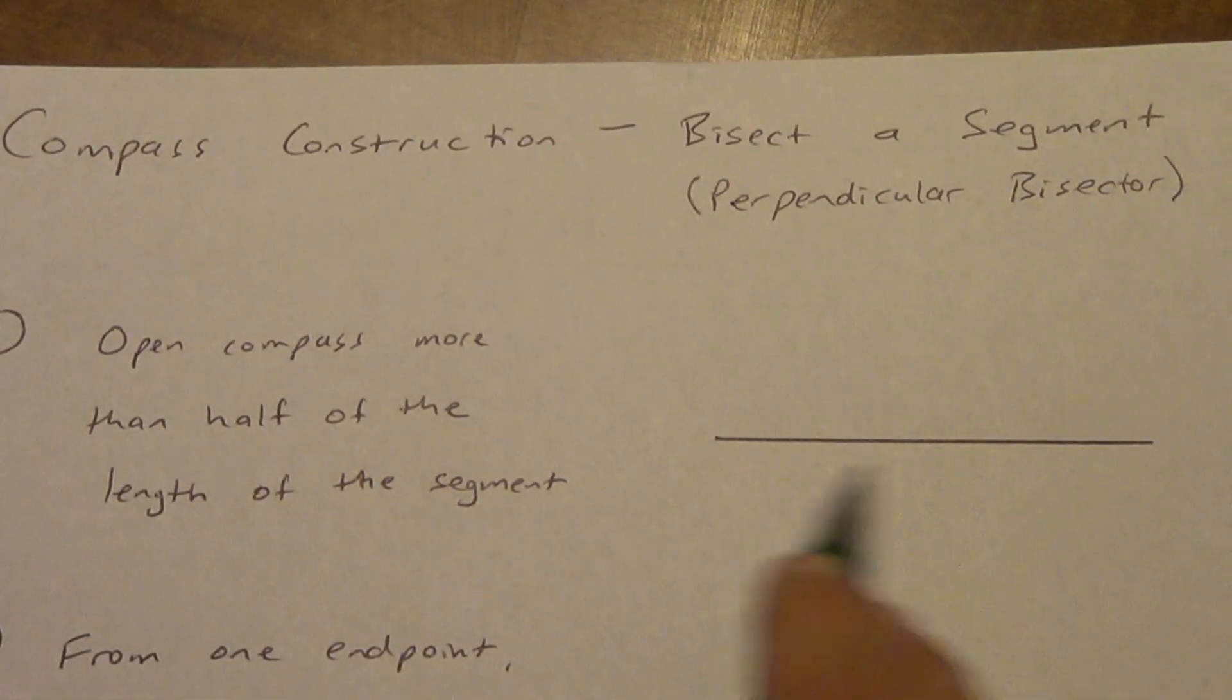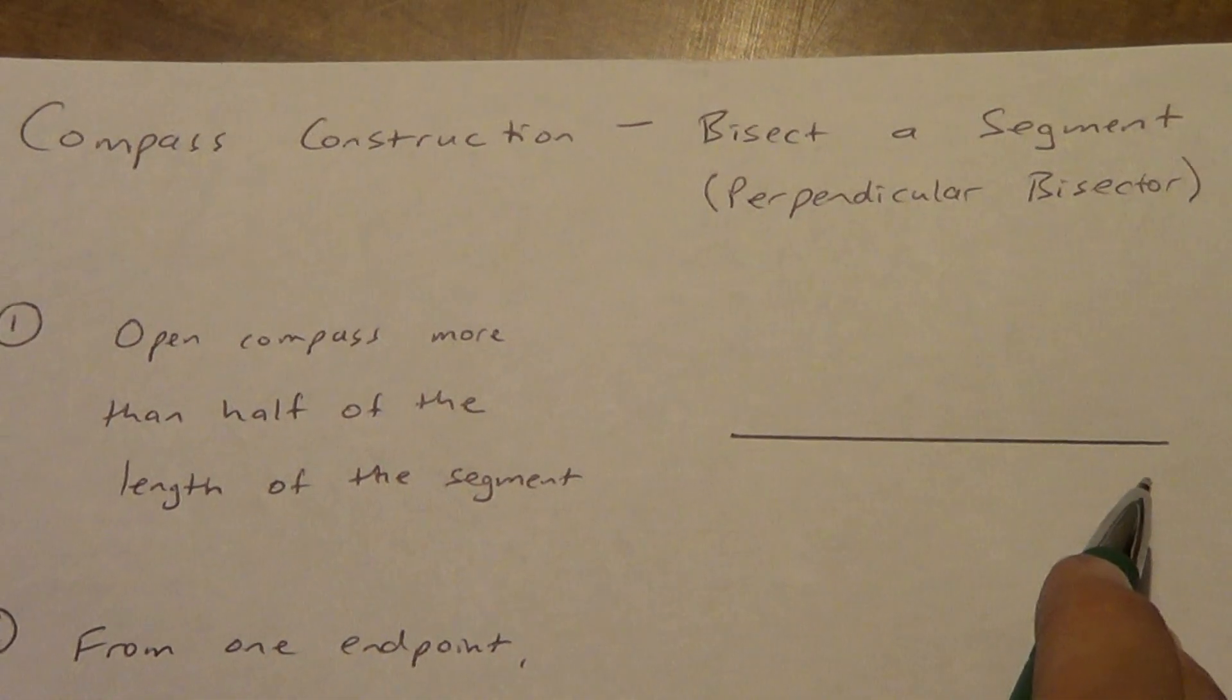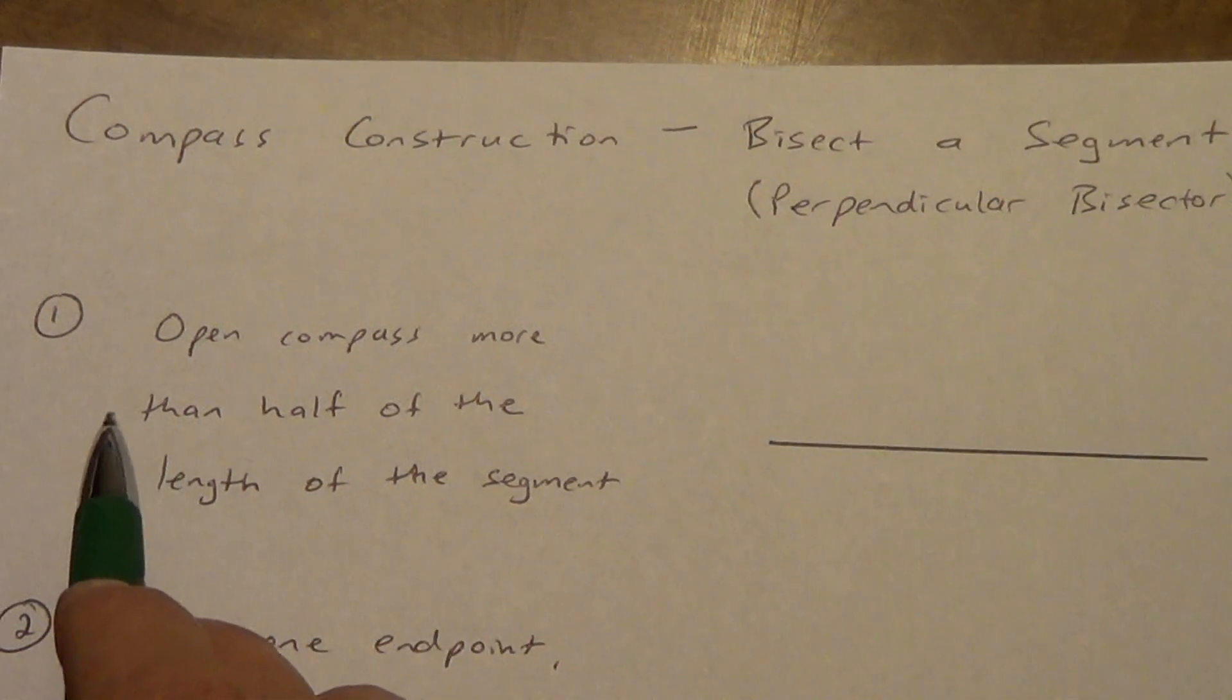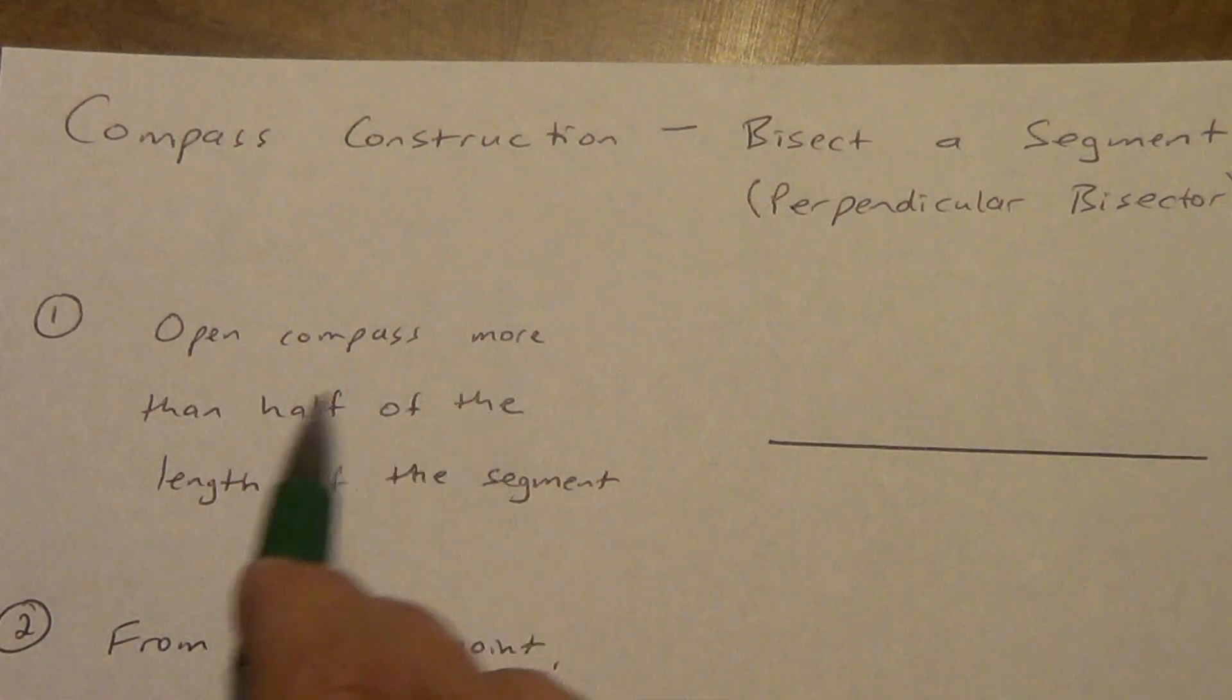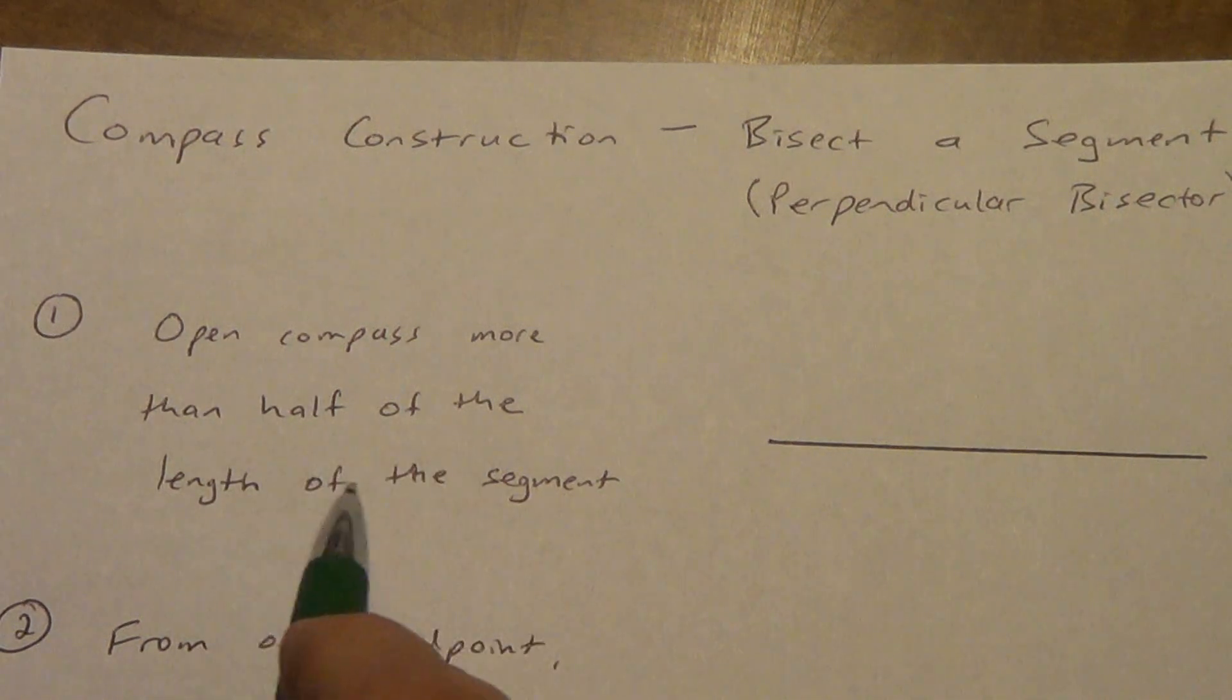So I've got this segment drawn on my paper already. If you need to pause and get that drawn on your paper, that's fine. But here we go with step one. We're going to open our compass more than half of the length of the segment.